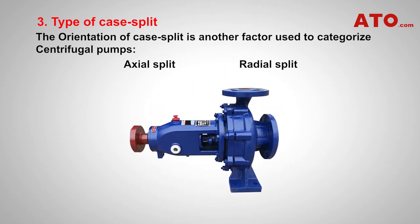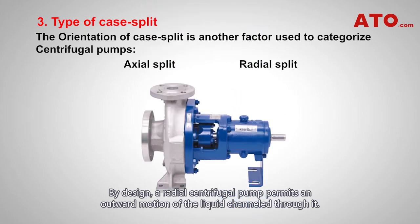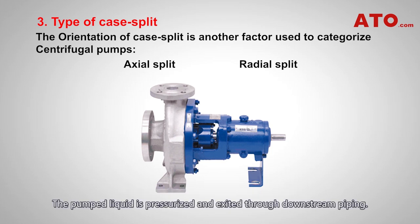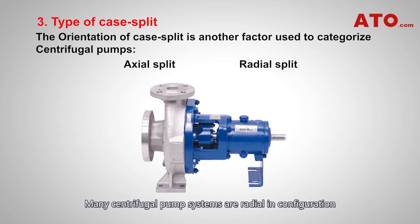Radial split: the pump case is split radially, with the casing split perpendicular to the shaft center line. By design, a radial centrifugal pump permits an outward motion of the liquid channeled through it. The pumped liquid is pressurized and directed through downstream piping. Many centrifugal pump systems are radial in configuration and are manufactured to meet certain industry standards.